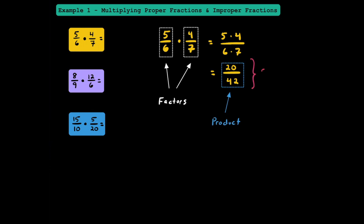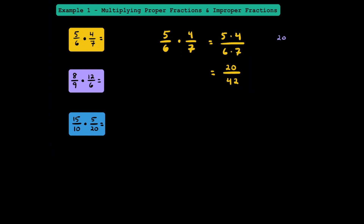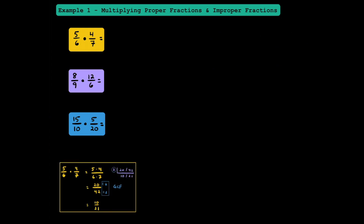Now that we have our product, we have to ask ourselves: can we simplify this fraction? We have to check their greatest common factor, or GCF. If the GCF between 20 and 42 is equal to 1, then we can't simplify. If it's anything else, we can — we're checking to see if these numbers are relatively prime. Since they're both even numbers, we know we can divide them both by 2 to get 10 over 21. Since 10 and 21 are relatively prime, 2 is the GCF. Dividing numerator and denominator by 2, we get the most simplified product of 10 twenty-firsts.